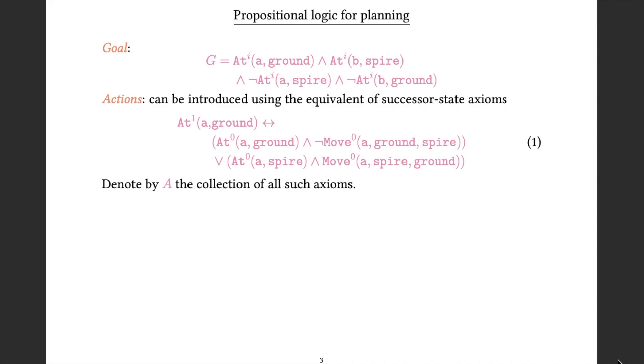We can talk about actions essentially using the equivalent of successor state axioms from the situation calculus. I have something here that expresses the idea that A is on the ground at step 1 if and only if A was at the ground at step 0 and it is not the case that at step 0 A moved from the ground to the spire, or A was at the spire at step 0 and A moved from the spire to the ground at step 0. So it's the same format as we used previously. Something is true at a step in the plan if and only if it was true at the preceding step and we didn't do something to make it false, or we did something specifically to make it true.